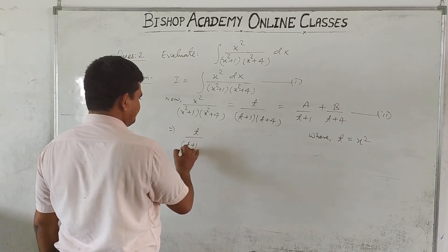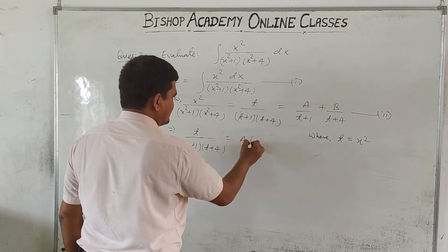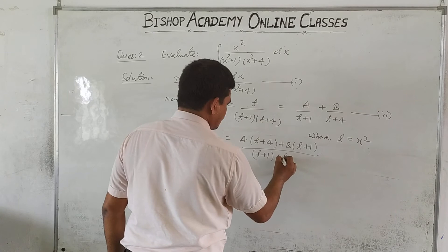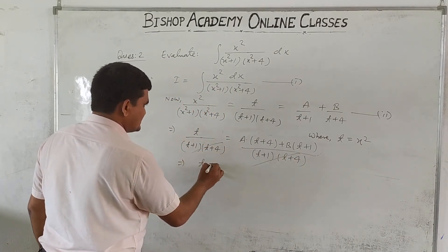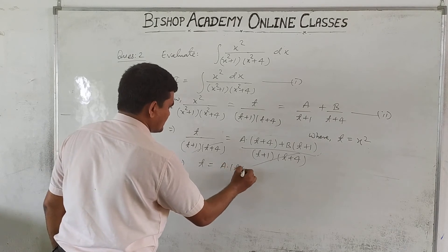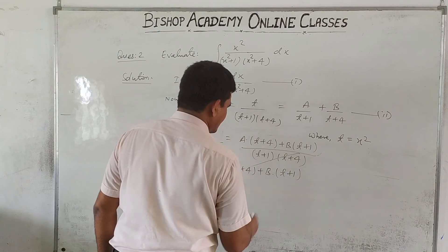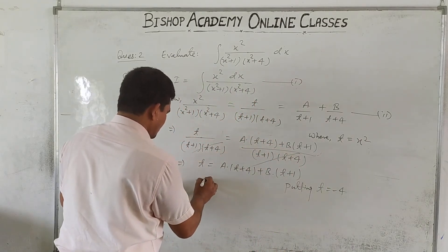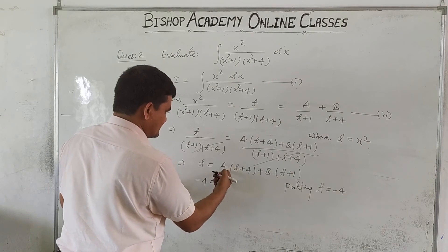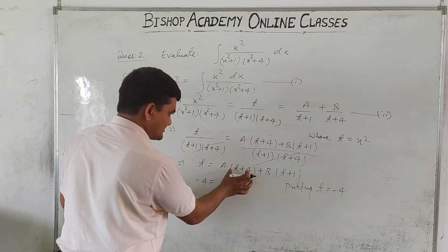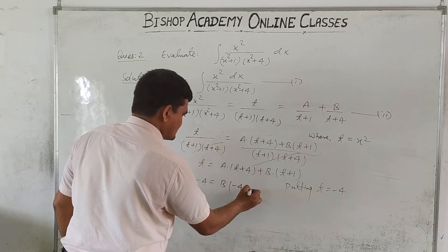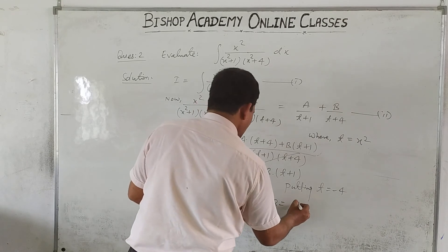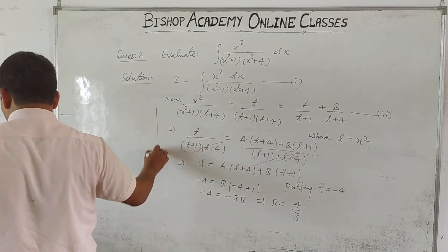So t upon (t+1)(t+4) = [A(t+4) + B(t+1)] / [(t+1)(t+4)], giving t = A(t+4) + B(t+1). Putting t = -4: -4 = A(0) + B(-3), so -4 = -3B, therefore B = 4/3.